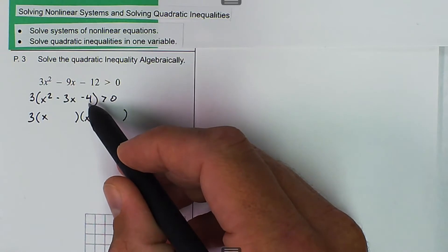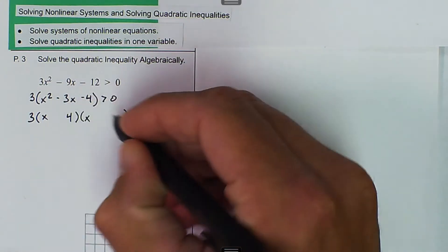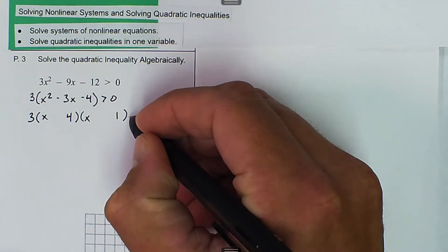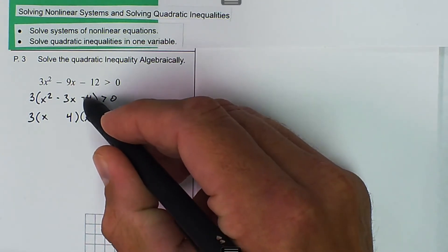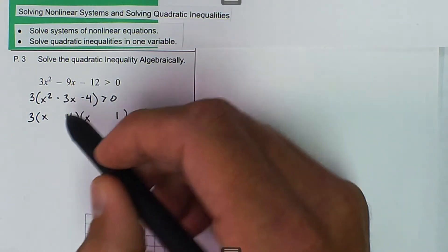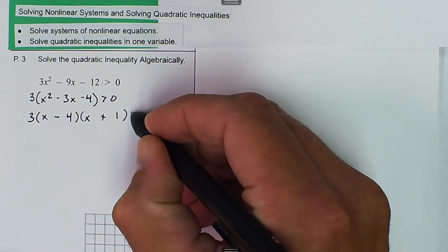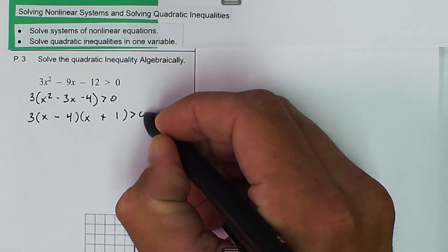Two numbers that multiply to negative 4 in this case are going to be 4 and 1. How do we multiply to get negative 4? One has to be positive, one has to be negative, but it has to add to a negative 3. So we got negative and positive, and that's going to be greater than 0.